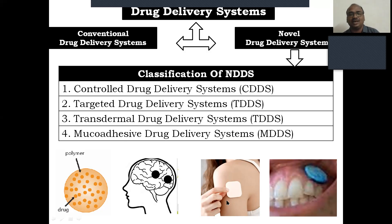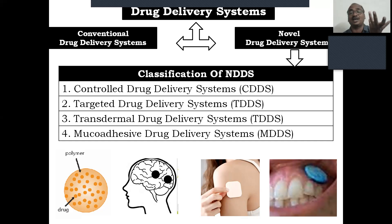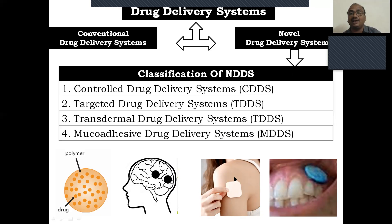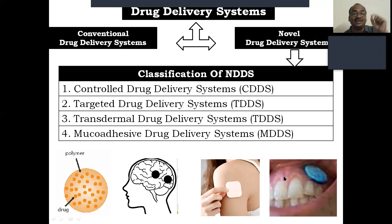Third: transdermal drug delivery system — through the skin, not locally but systemically. The drug enters into the systemic circulation through the skin. In future, even paracetamol may come as a transdermal form, entering through the skin into systemic circulation. Most foreigners prefer the transdermal drug delivery system over oral tablets; it is a big market — if you are intelligent in this formulation you could become very rich. Fourth: muco-adhesive drug delivery system — through the mucus layer, the wet surfaces; we deliver the drug through wet surfaces into the body.